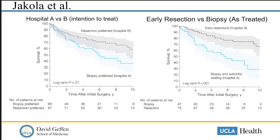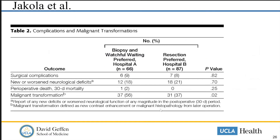The other chart shows what happened with survival comparing what treatment patients actually received. Not every patient at each hospital received the preferred treatment, but data from this study show that those patients who underwent early resection did significantly better than those who only got biopsy and watchful waiting. This bears out along survival lines, but also with similar rates of surgical complications, neurologic deficits, perioperative death, and malignant transformation — all going to show a big benefit for upfront resection compared to biopsy.